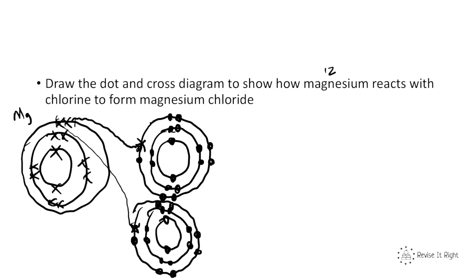That means we need 2 chlorines to react with 1 magnesium. So the formula is MgCl₂, because we need 2 chlorines to react with 1 magnesium.